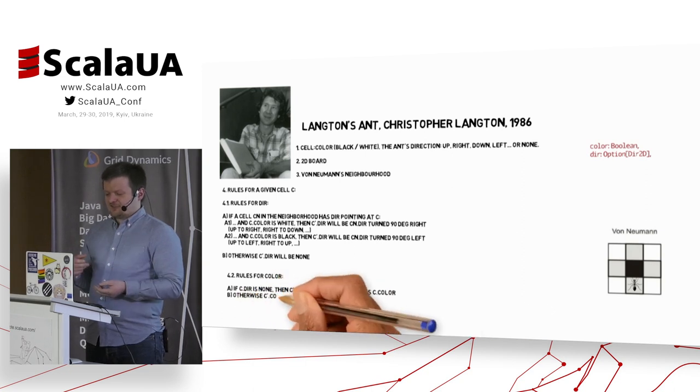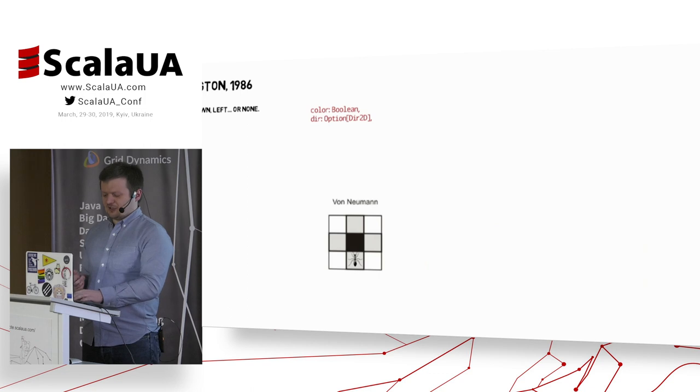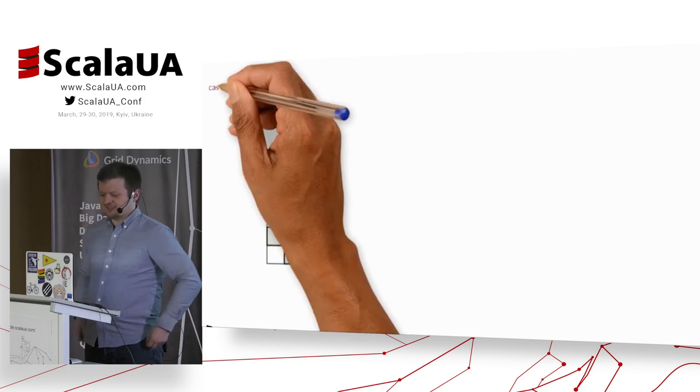For color, it's simply that if the ant is going to the cell, the color is flipped. Otherwise, it stays the same.